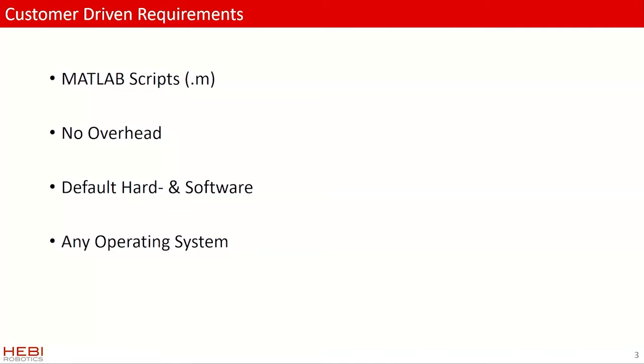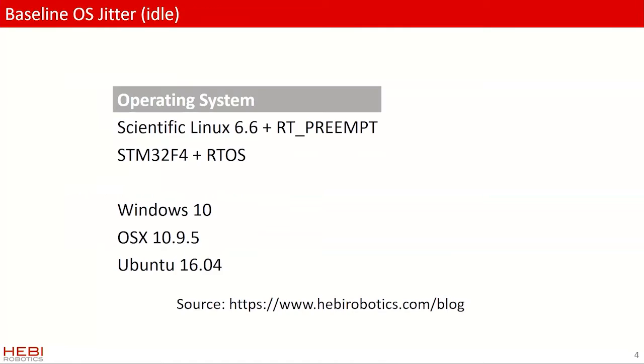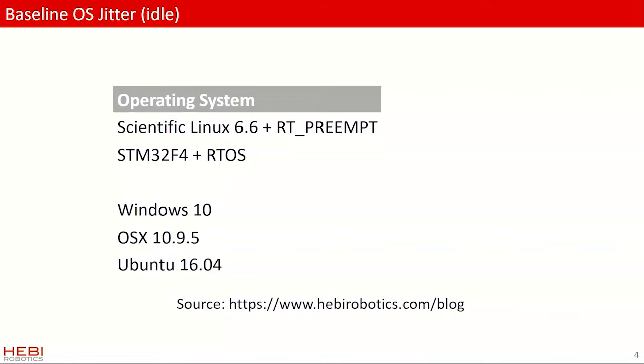And we wanted to run on any operating system. We tried to find data on what that means. Windows is not a real-time operating system. It's typically not used for this. There's not a lot of data out there on what you can actually expect. So we did take about on the order of half a billion measurements. And the maximum that we saw was about 3 to 17 milliseconds for these non-real-time OSs.